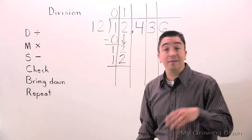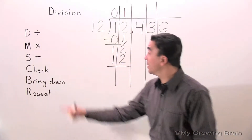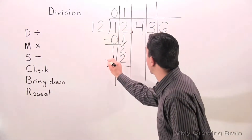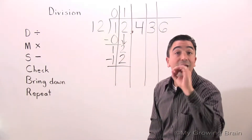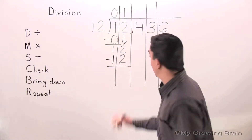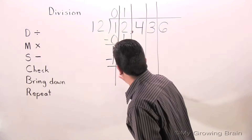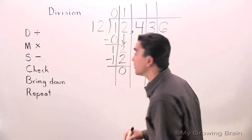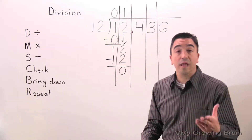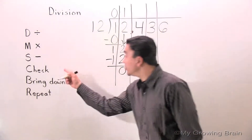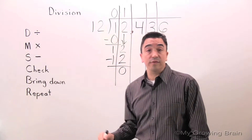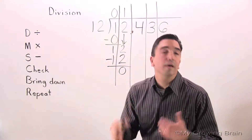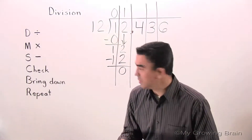Next step: Subtract. 12 minus 12 equals 0. Next step: Check — 0 is less than 12. Keep on going.